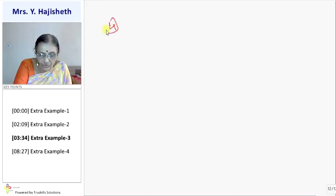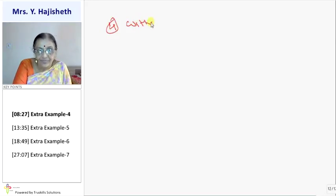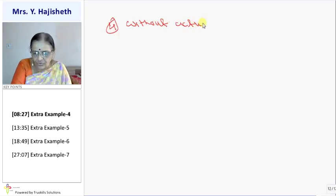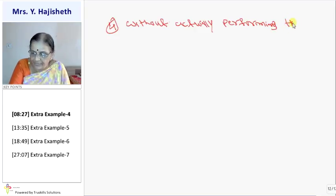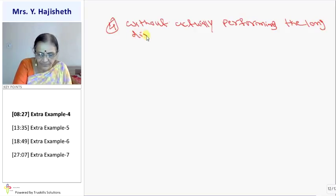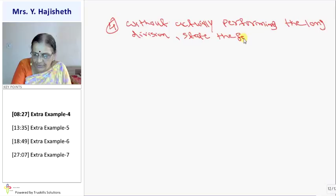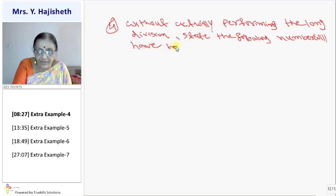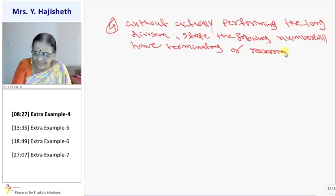Sum number 4. They said, without actually performing the long division. Division nahi karna hai. State the following number will have terminating or recurring decimal expansion.